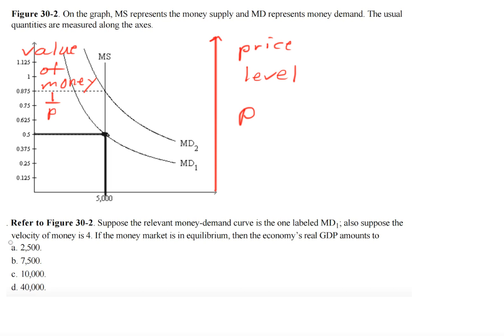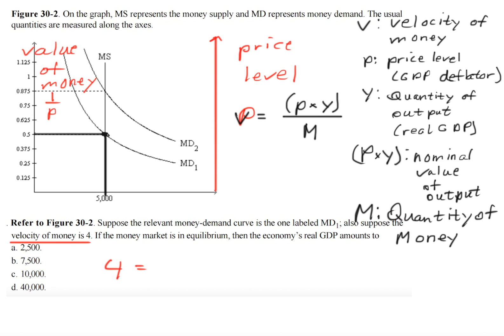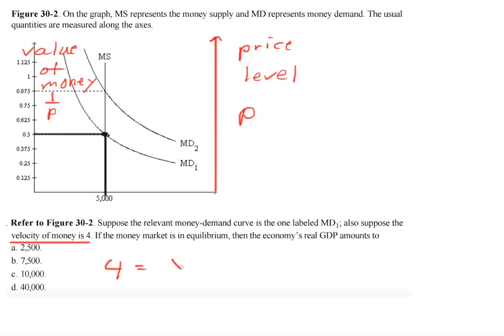So we're given the velocity of money, V, which is 4. We're trying to find the real GDP, which, if I bring this back up, real GDP is Y. So we have our Y term.